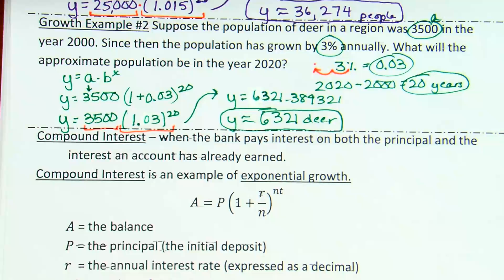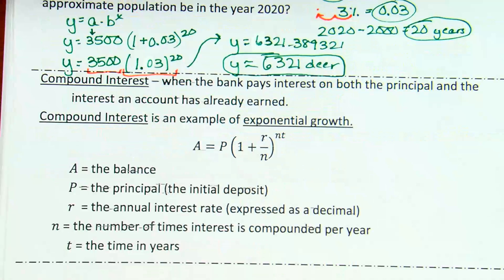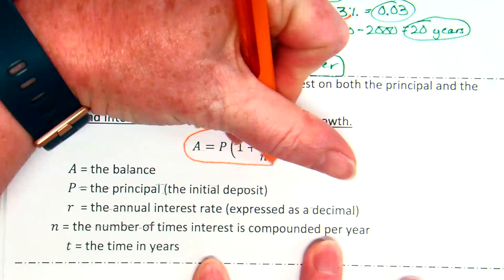Before we flip to the backside, there's some information about compound interest. So, compound interest is another example of growth. You know what interest is? Yeah. Okay. So, when the bank pays interest on both the principal and the interest that an account has already earned, that's compound interest. So, it's paying interest on everything you have in there. It's an example of exponential growth. I've got a yawn in the middle of that. And here's your equation set up.